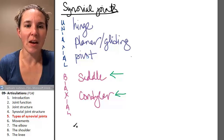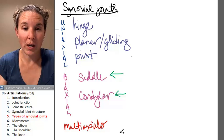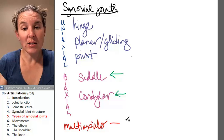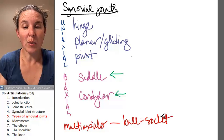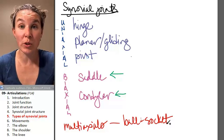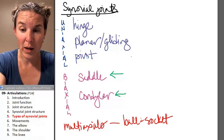And then our multiaxials. Give me an example. We can go everywhere. These guys are ball and socket. These are ball and socket joints. And your shoulder and your hip are examples of that. Let's go look.